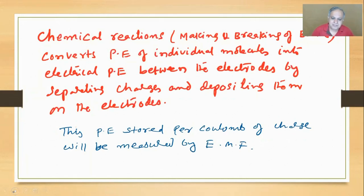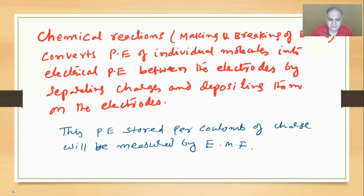Chemical reactions involve making and breaking of bonds - finally that is what chemical reactions are. There will be net energy release. It converts potential energy of individual molecules into electrical potential energy between the electrodes by separating charges and depositing them on the electrodes.